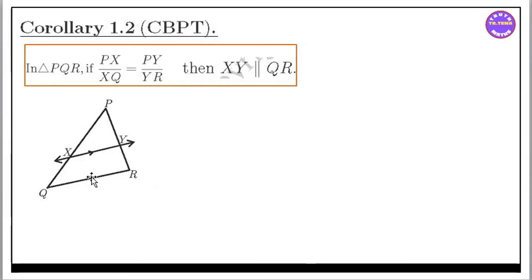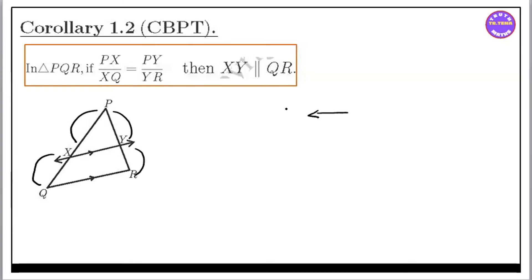XY QR — whereas PX by XQ equal to PY by YR. This is the same way. If you have a triangle in the triangle, you can see the same way. You can reverse it. You can see the same way.